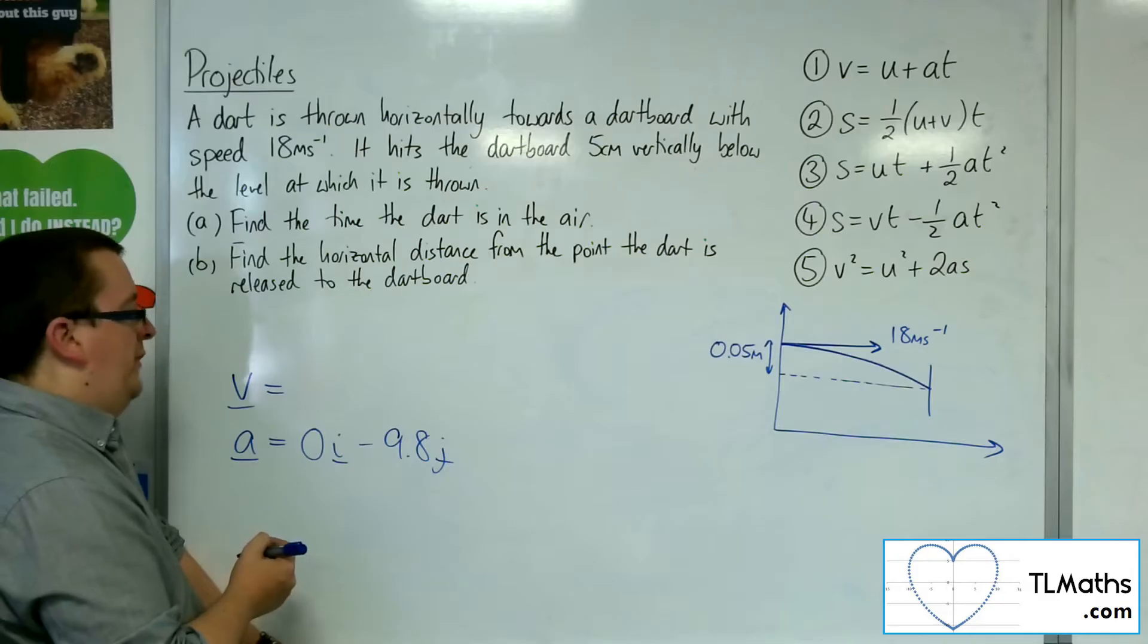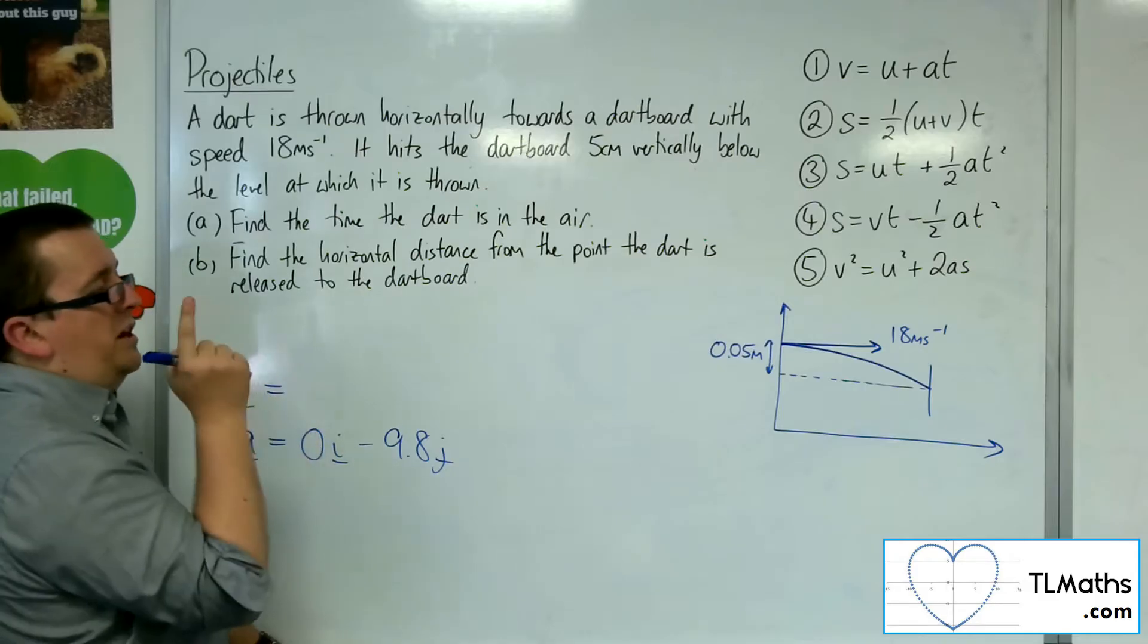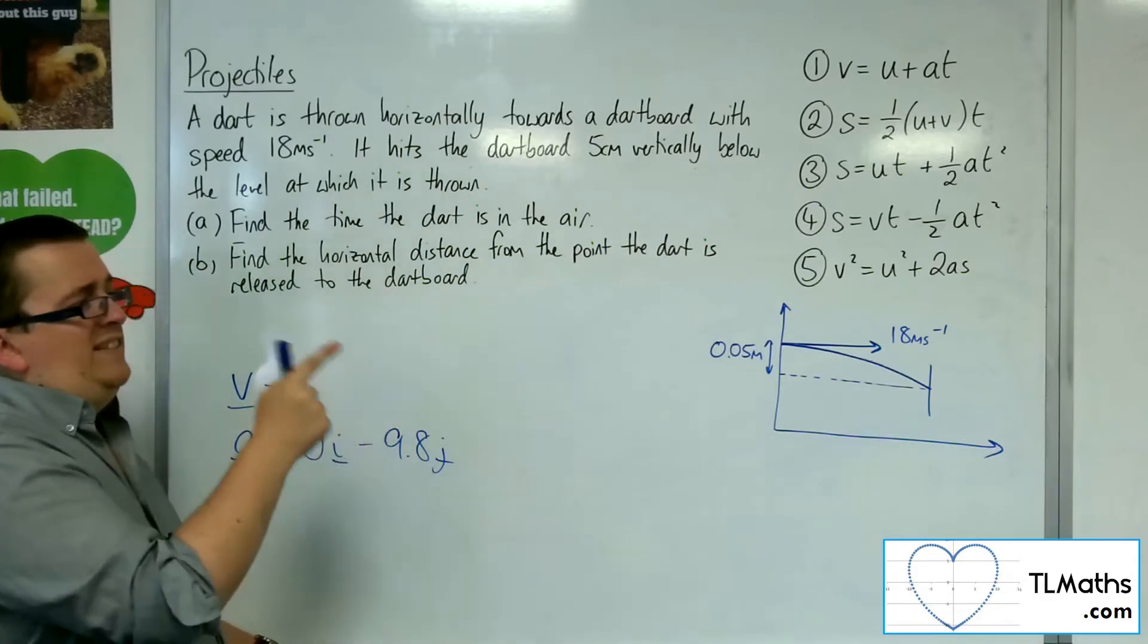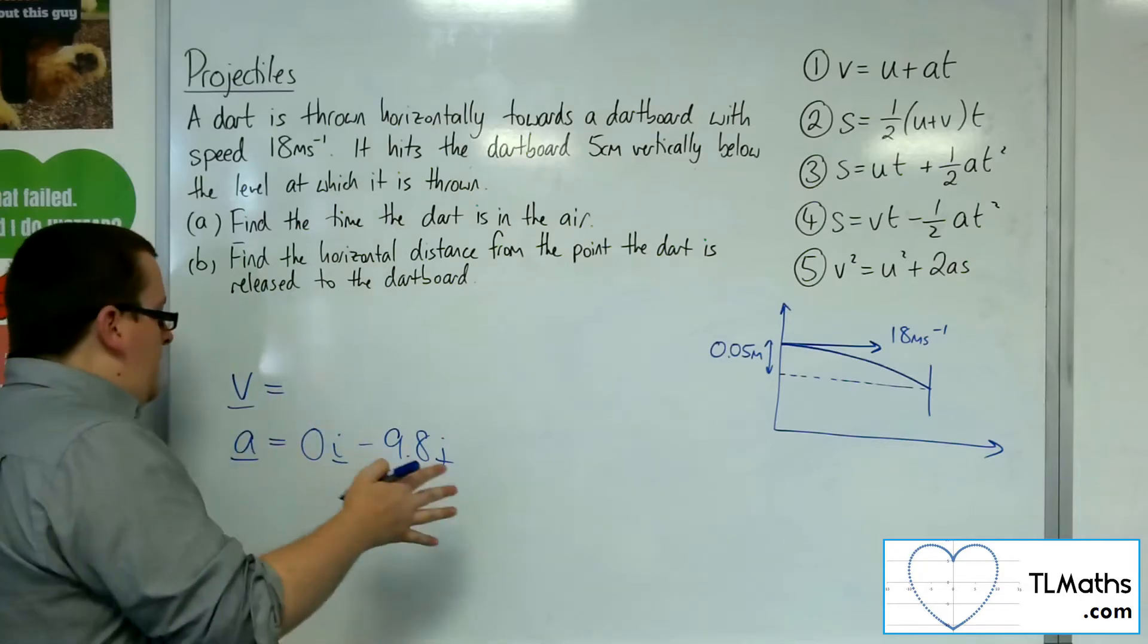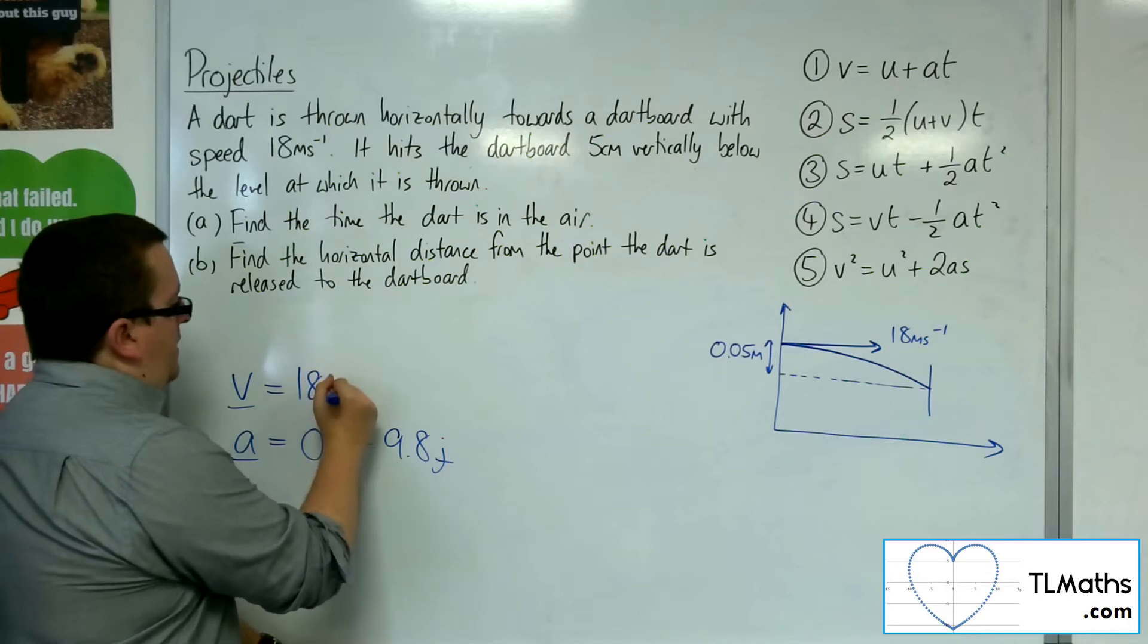Now the initial velocity for the x direction is just going to be 18, 18 cos of 0. Cos 0 is just 1, so 18. So we've got 18i.